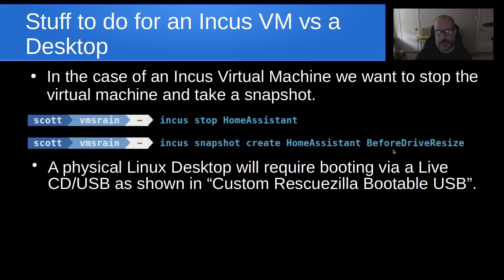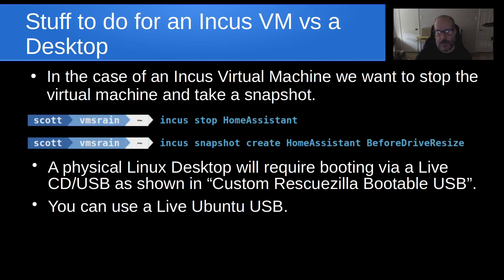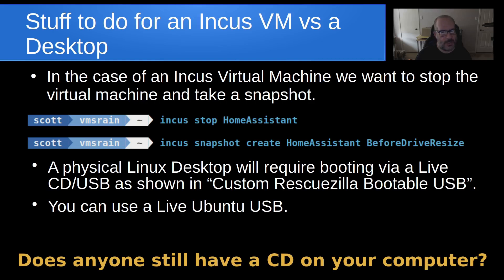A physical Linux desktop will require booting via a live CD or USB, as shown in my video entitled Custom RescueZilla Bootable USB. Presumably, what you would do is back up a drive using a tool like RescueZilla, and then restore your drive to your newer, larger hardware. You can use a live Ubuntu USB as well, and usually those are readily available when you download an ISO for Ubuntu. That is an installation USB, but it is also a live USB. A lot of times they're referred to as live CDs simply because they are ISO formatted files.